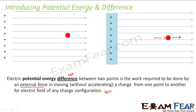Some work is done to take this object from this point to this point. You will do some work to take this charged particle from point A to point B. So this work done is nothing but your potential energy difference. Please remember: work done is potential energy difference and not potential energy.